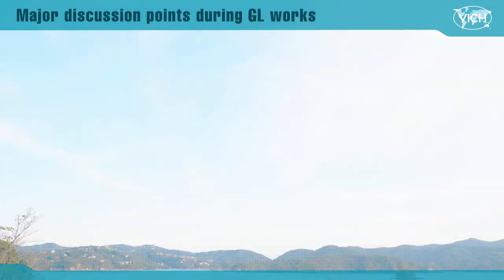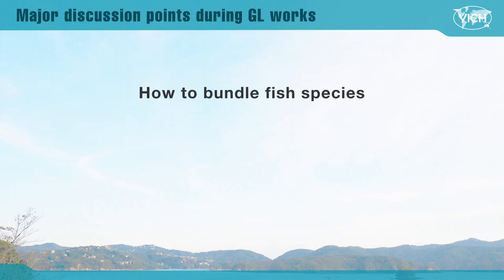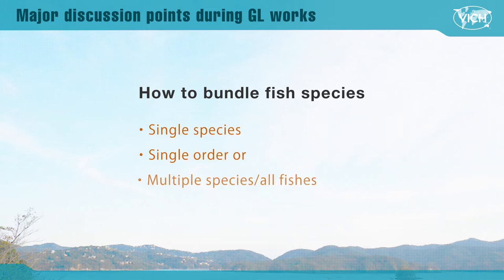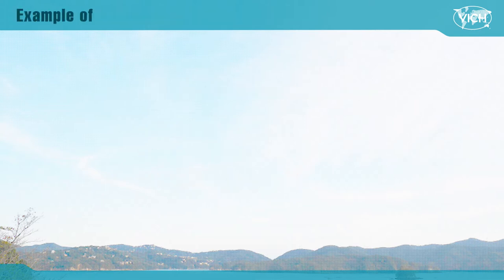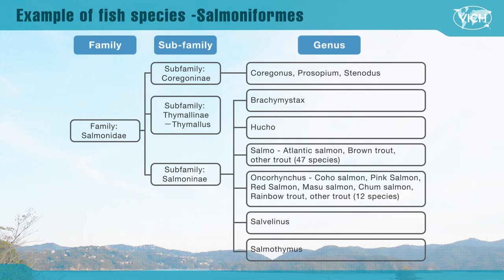Major discussion during the guideline development regarded several points. The first point was whether the study should be done for individual species, single order with multiple species, or one study for all fish species. One example is the order of Salmoniformes. In this order there is a huge variety of fish, but major fish in aquaculture are those of the genus Salmo and Oncorhynchus. The major fish species are Atlantic salmon, coho salmon, and rainbow trout.